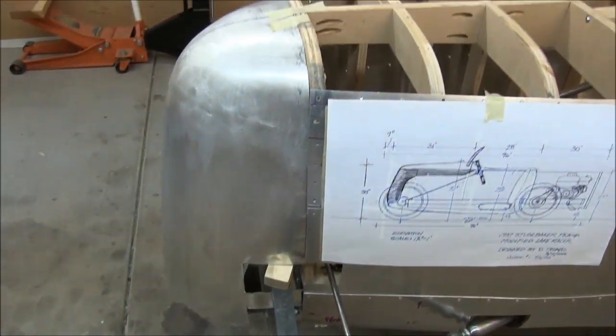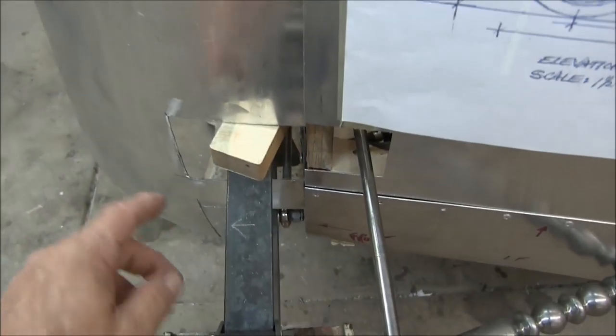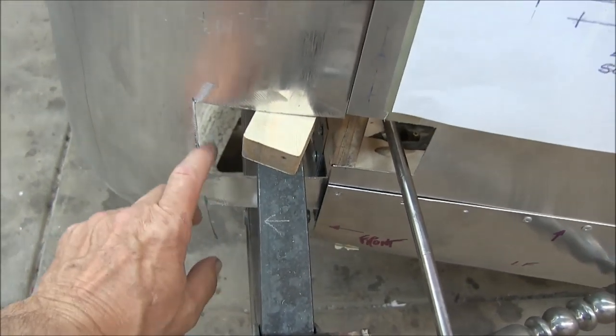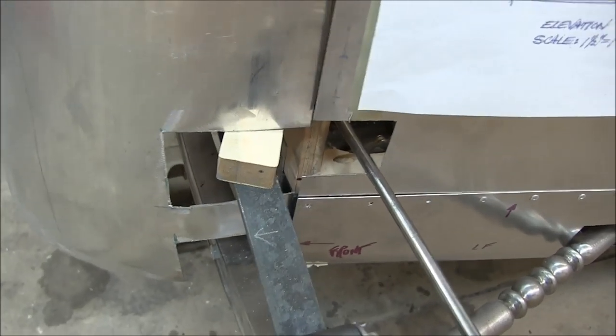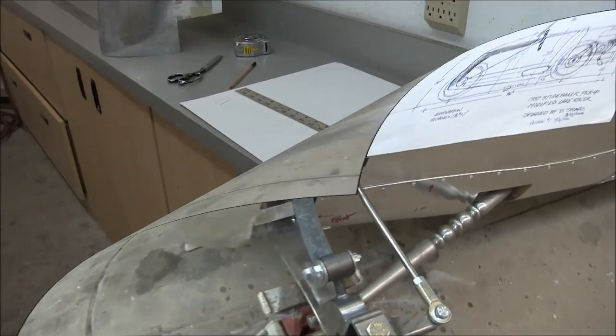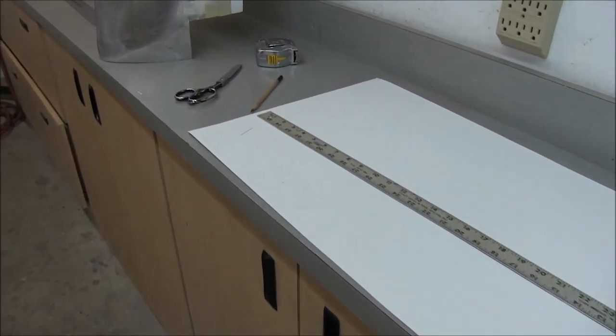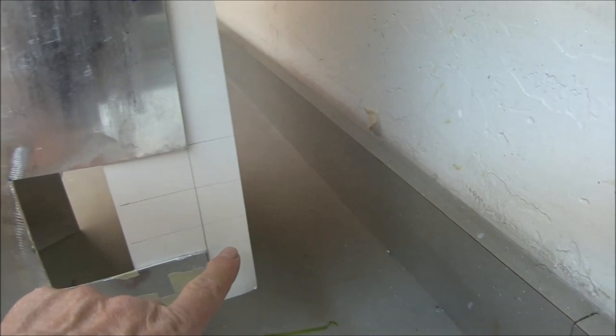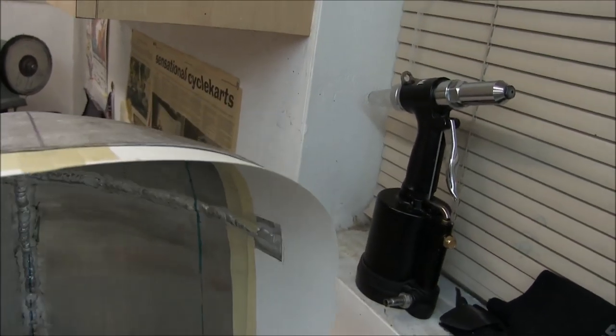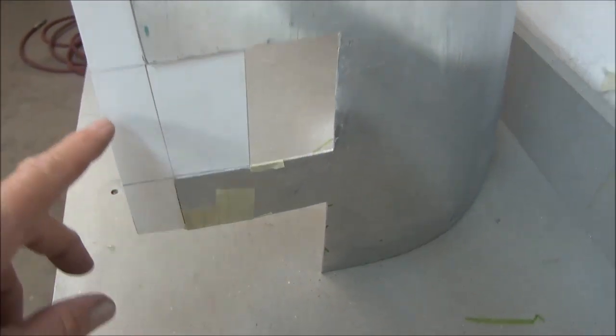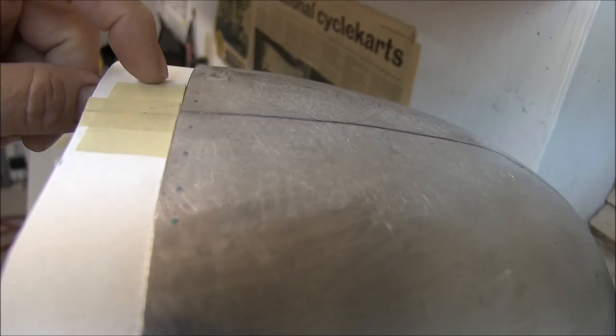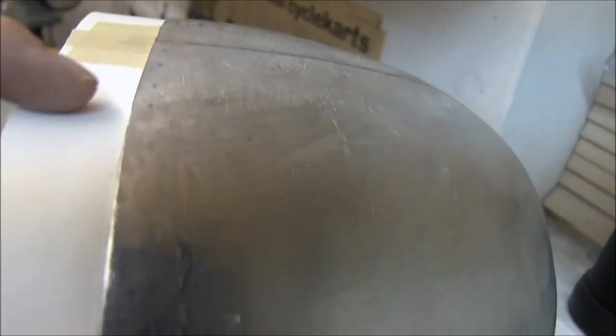At the same time, I'll have him weld those in. I'll cut some pieces to try to clean up these openings and get them closer to what I want. They're just way oversized right now just to make it easier to fit. Using some poster board, I'm creating a pattern. This will go from one and a quarter all the way up to basically zero right here. So it'll be tapered.